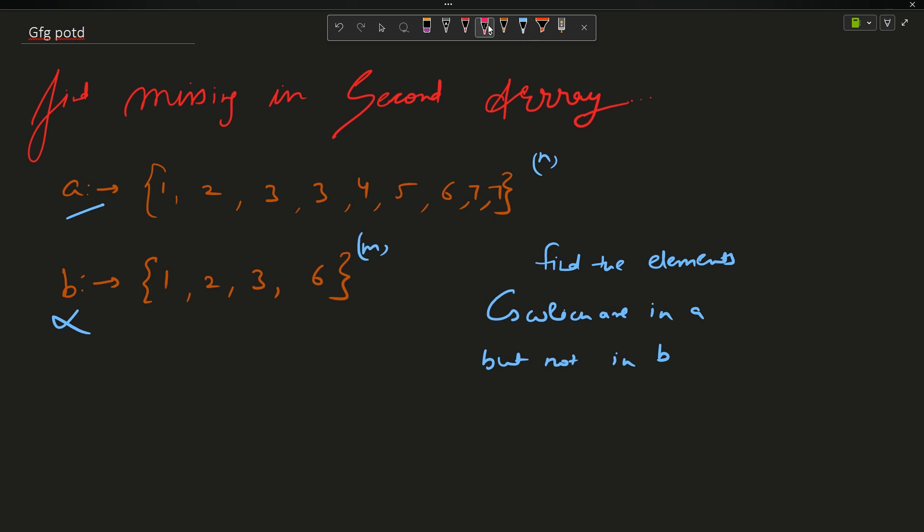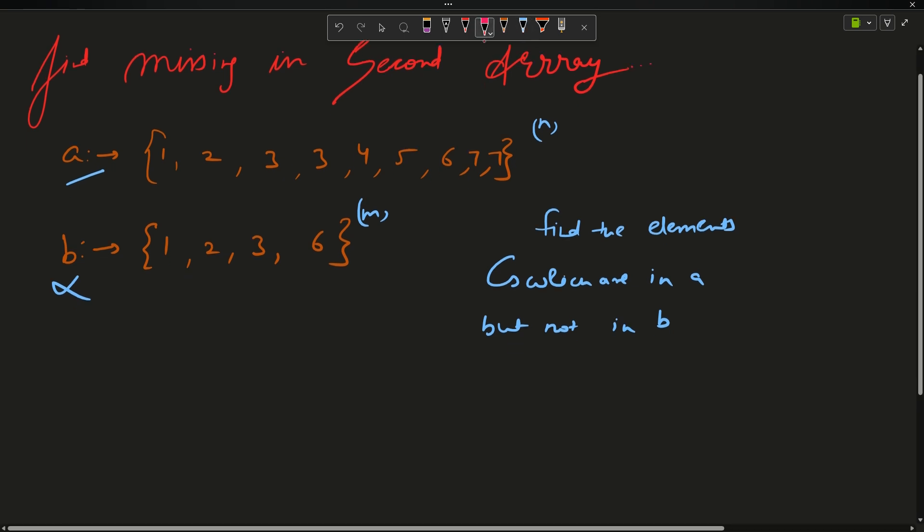Now how can you solve it? The question is really simple today. The brute force approach says: I want the elements which are in A but not in B, so I will traverse A.